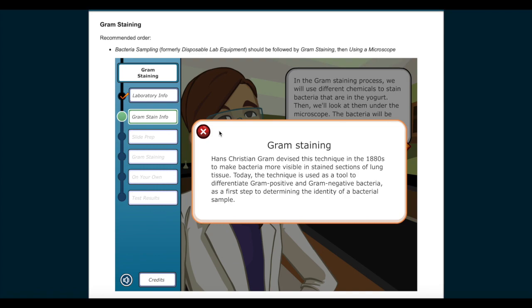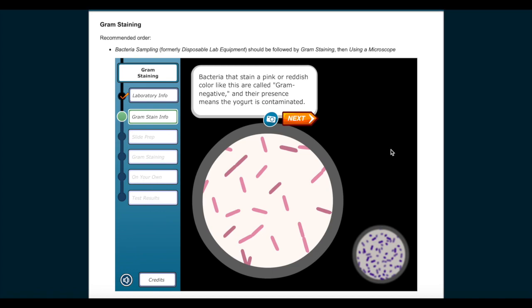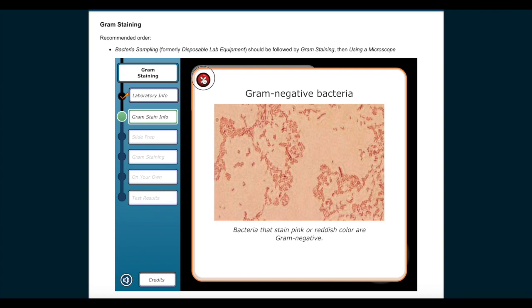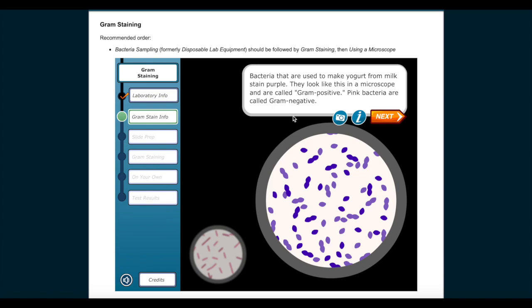Bacteria that stain a pink or reddish color, like this, are called Gram negative, and their presence means the yogurt is contaminated. Bacteria that are used to make yogurt from milk stain purple. They look like this in a microscope and are called Gram positive. Pink bacteria are called Gram negative.